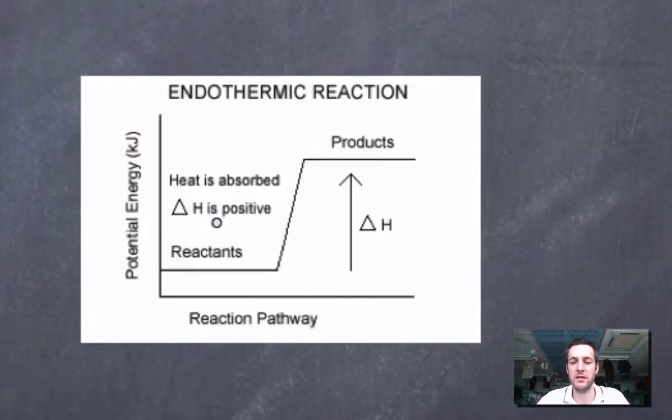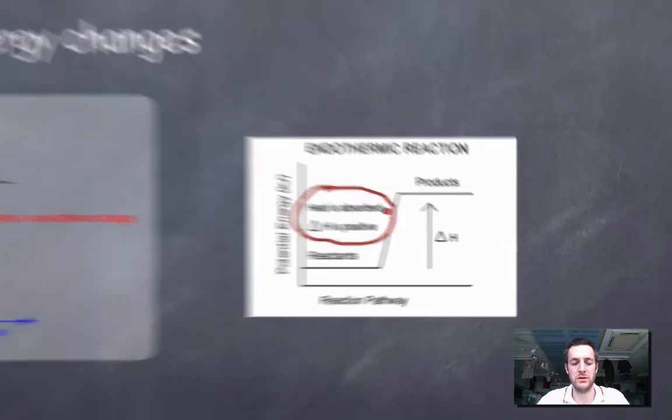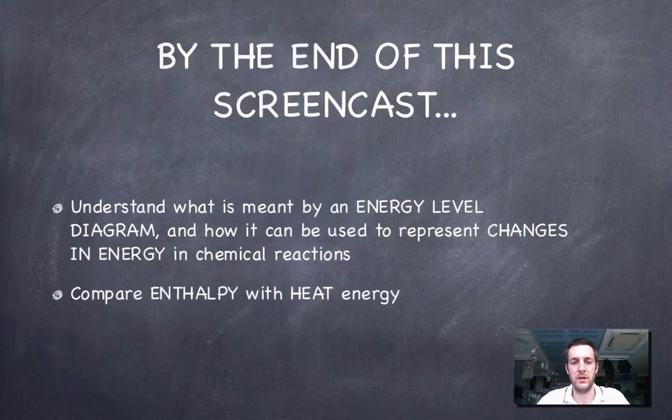If we look at this slightly more complex diagram, but really not a lot more to it, except it's got the enthalpy change labeled on it again, we can see that the enthalpy is going up from reactants to products. Heat is being absorbed, and therefore delta H, or the enthalpy change, is a positive number. So just like it was important to remember that in exothermic reactions, heat is released to the surroundings. Here, heat is absorbed from the surroundings, and the enthalpy change is a positive quantity.